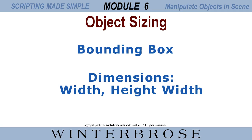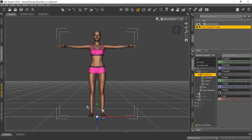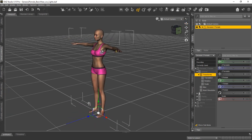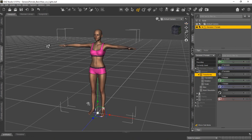In Module 6, we're going to teach you about object sizing for objects loaded into the scene. We're going to go over the bounding box and how to calculate the width, height, and depth of nodes within the scene. Just ignore the 'width' label on screen here — that should be depth. We're going to teach you all about the bounding box, those little lines you see around a node when it's selected, and how to use that to your advantage when scripting to figure out how much area is covered by a particular object.